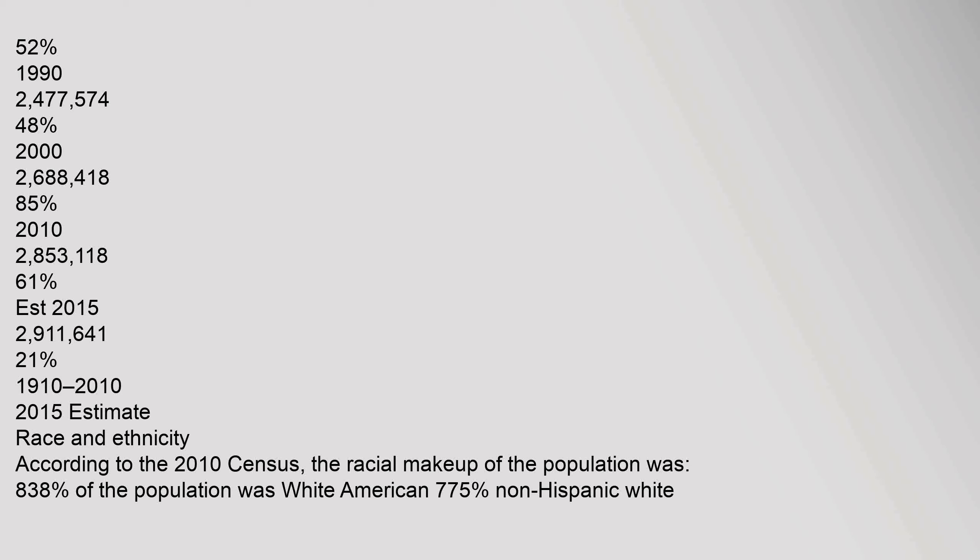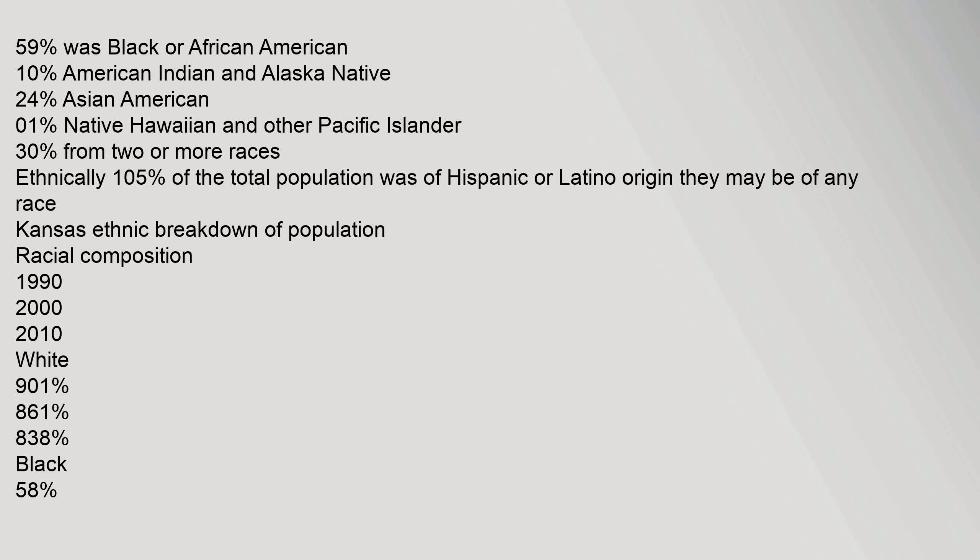According to the 2010 census, the racial makeup of the population was: 83.8% white American (77.5% non-Hispanic white), 5.9% Black or African American, 1.0% American Indian and Alaska Native, 2.4% Asian American, 0.1% Native Hawaiian and other Pacific Islander, and 3.0% from two or more races. Ethnically, 10.5% of the total population was of Hispanic or Latino origin.